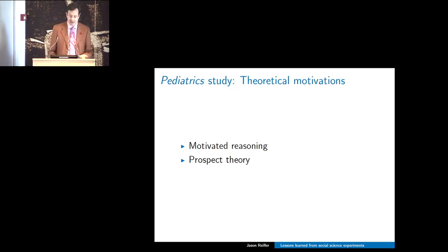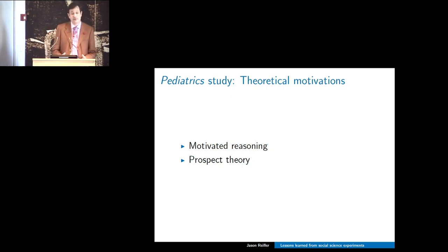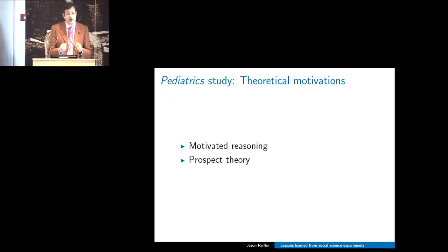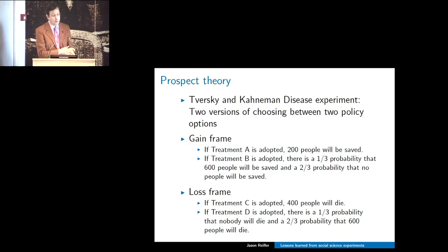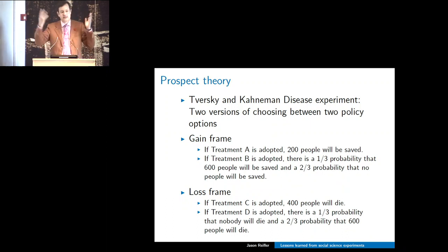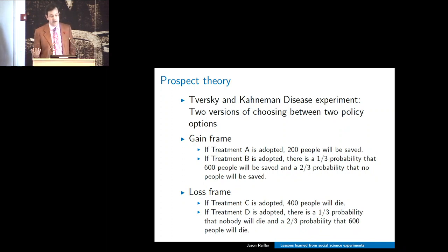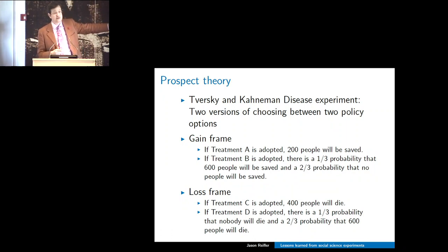Let's talk a bit about the pediatrics study and our theoretical motivations. The first was motivated reasoning: people have goals when processing information. One of these goals may be directional—there is a conclusion they want to reach, and how they process information is heavily influenced by that end goal. The second was prospect theory, one of the most profound results in social science—the canonical Tversky and Kahneman disease experiment.